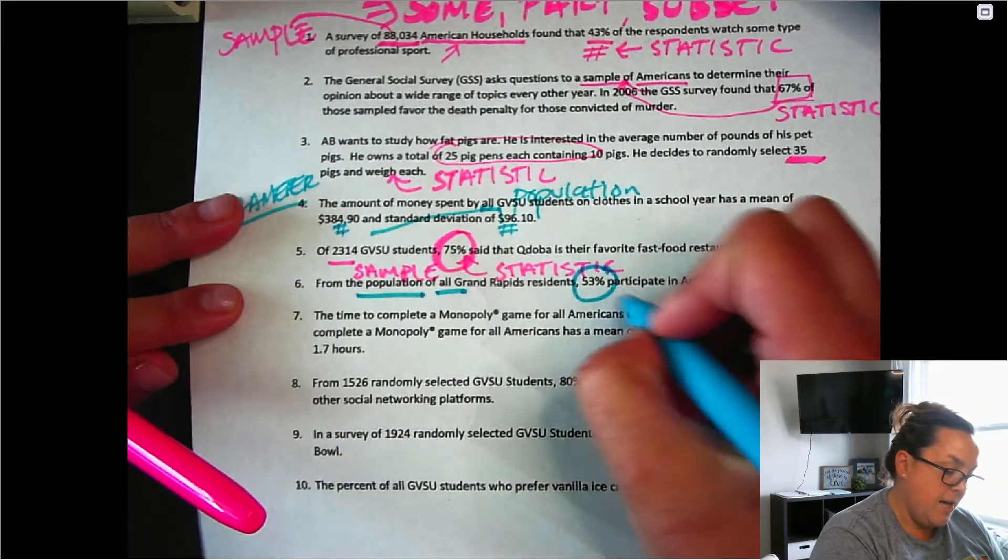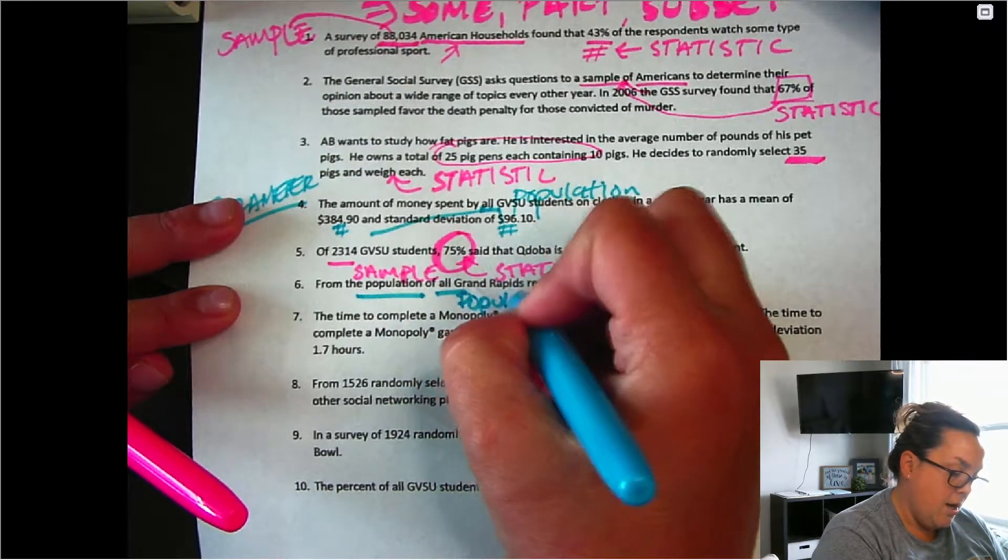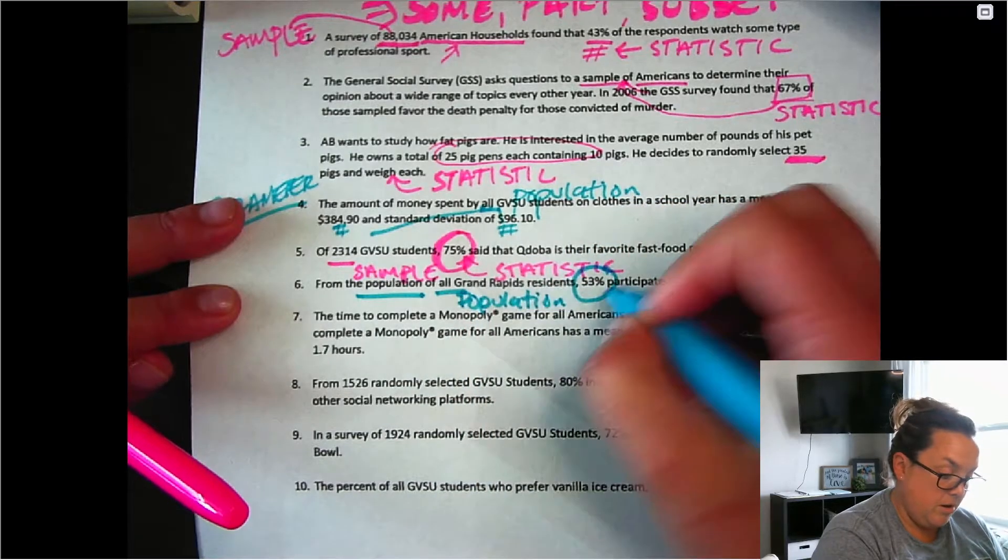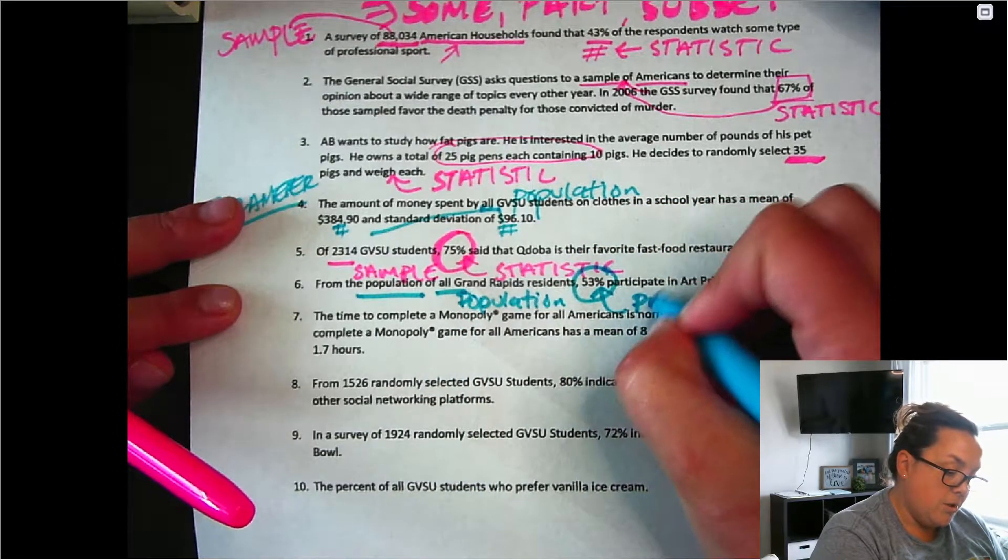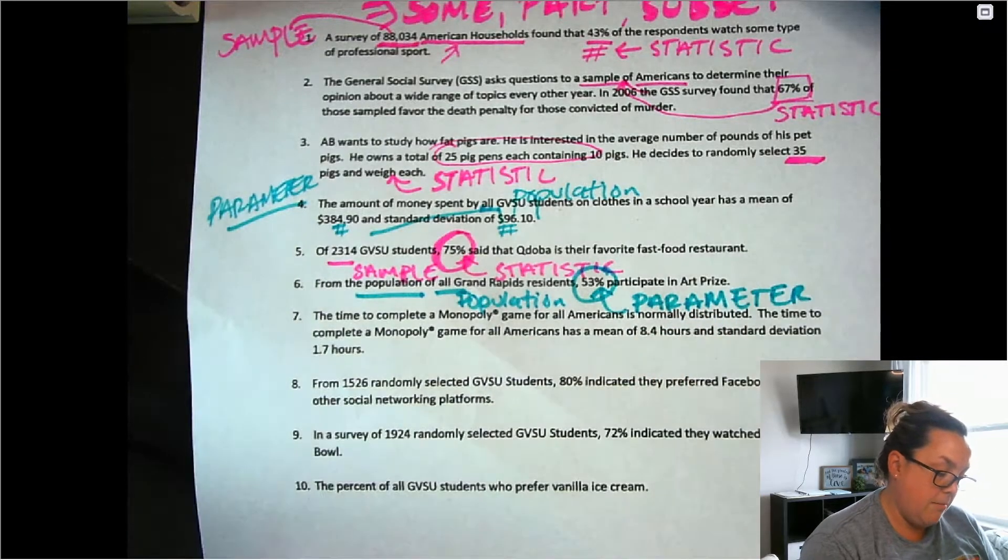So here we have a population of all GBSU residents. 53% said that they would participate in ArtPrize. So we know that this is a population because it says it, but it also says the word all, which means that this 53% is a parameter because it refers to that population.